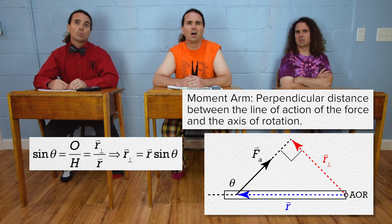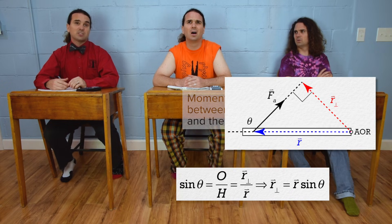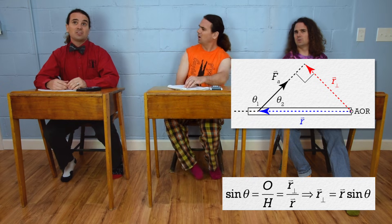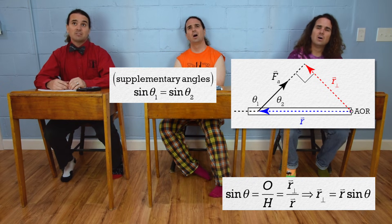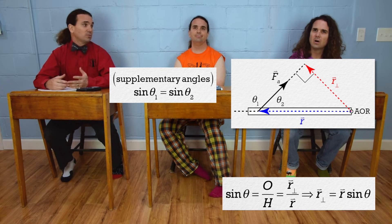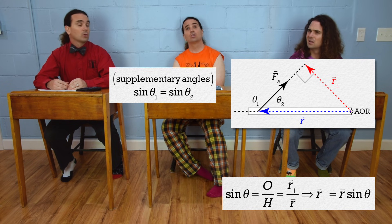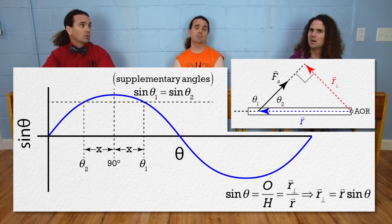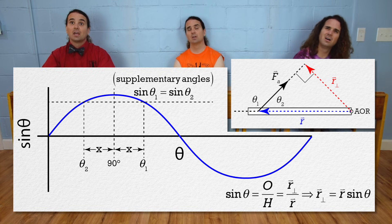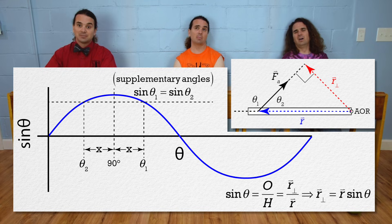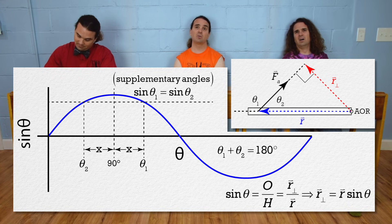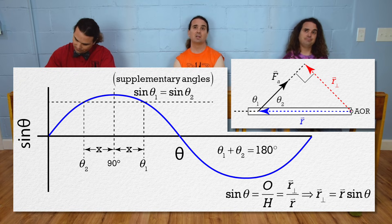I thought theta was on the other side. Right. Those two angles, let's call them theta 1 and theta 2, are supplementary angles. The sines of supplementary angles have the same values, so it does not matter if you use theta 1 or theta 2. Look at the shape of the sine curve: the sine of 90 plus x and the sine of 90 minus x give the same value, and 90 plus x and 90 minus x are supplementary angles — they add up to 180 degrees. Because the sines of supplementary angles have the same value, it does not matter which angle you use in the equation.